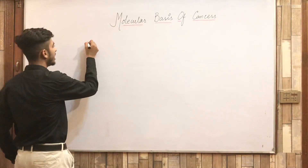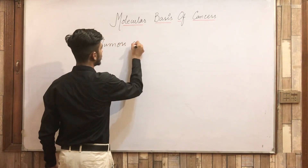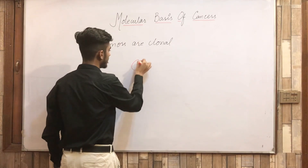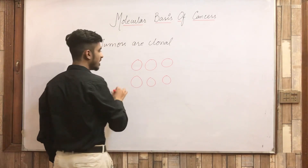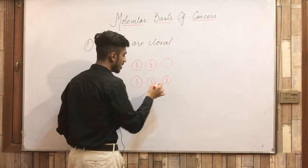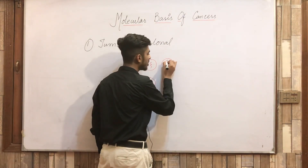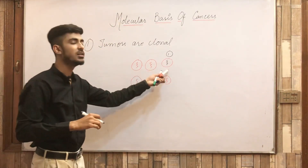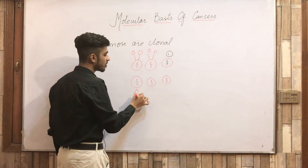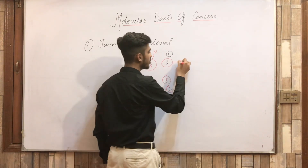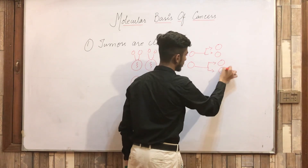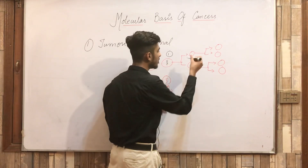Scientists observed that tumors are clonal. Now what does this mean? I am making a diagram here. For suppose, these are your tumor cells and these are your normal cells with genetic material in them. Now one of them is mutated — a mutation occurs in the genetic material of cell one — and this becomes a tumor cell. Every cell will obviously divide into two daughter cells, and this cell will also produce two daughter cells, which further carry out proliferation.